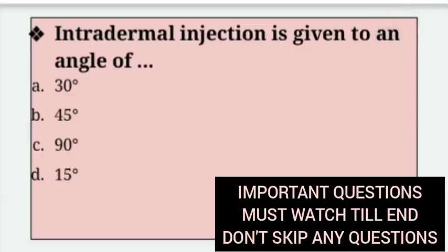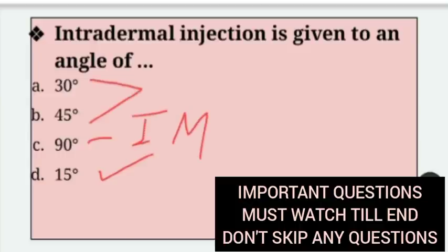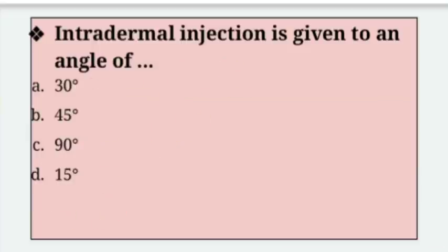Intradermal injection is given at an angle of? Options: 30 degrees, 45 degrees, 90 degrees, 15 degrees. Right answer is option D — intradermal injection is given at an angle of 15 degrees. At 30 or 45 degrees, subcutaneous injection is given. At 90 degrees, intramuscular injection is given. Intradermal is at 15 degrees.